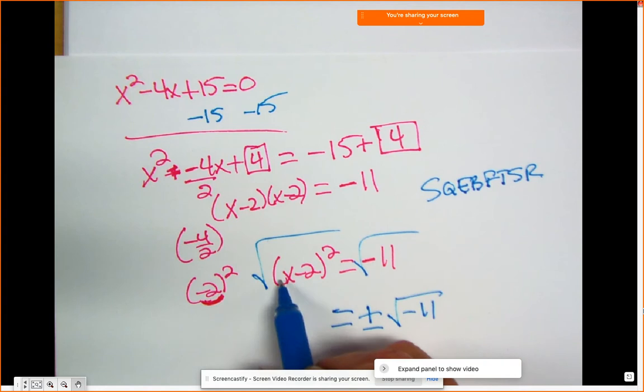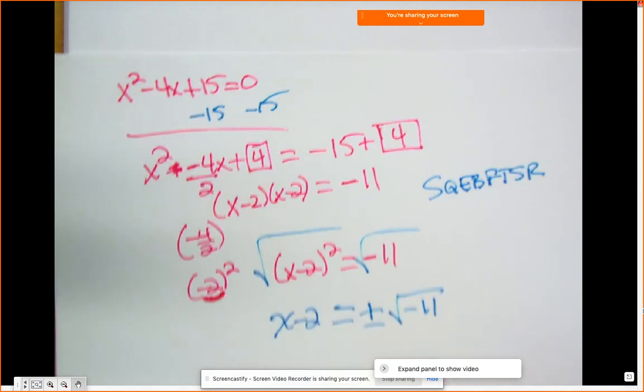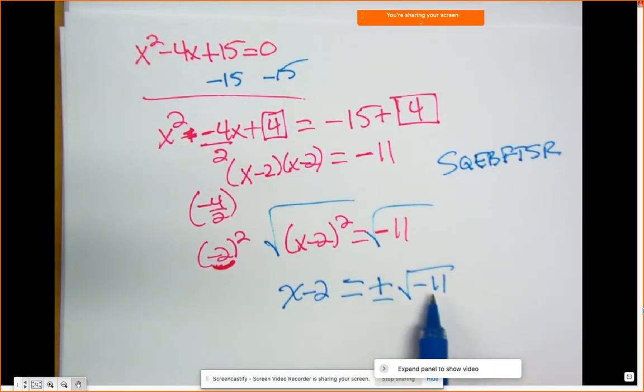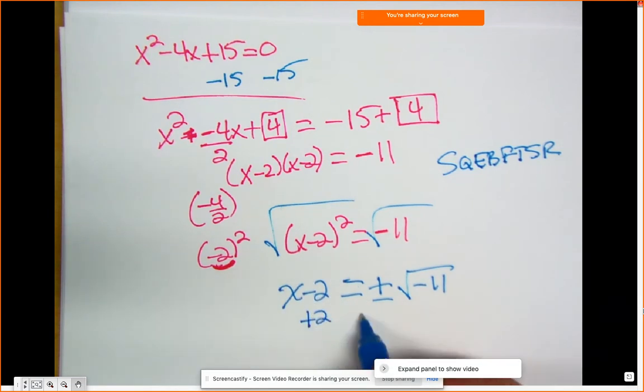Okay, here the square root of something squared, the square root wipes out that square and you just get x minus 2. Okay, over here, anything I can do? Or better yet, let me just go ahead and add the 2 to both sides.